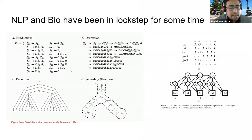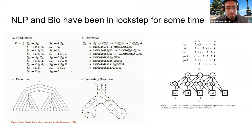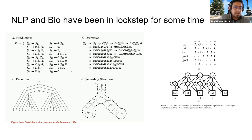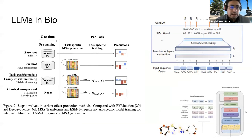Whenever NLP advances with language models, biology tends to repurpose those tools for its own benefit. The first cases go back to the 80s and 90s — NLP algorithms like suffix or speech part-of-speech tagging were repurposed for analyzing sequences. RNA secondary structure prediction can be done with stochastic context-free grammars, which were once state-of-the-art in NLP. HMMs are still state-of-the-art in many protein and DNA sequence tasks.